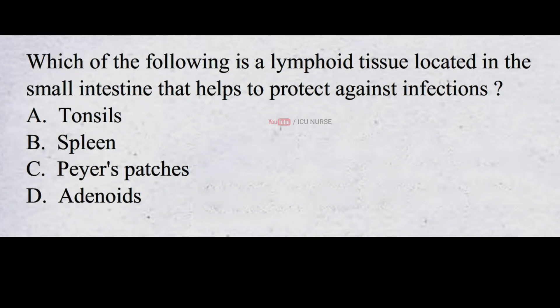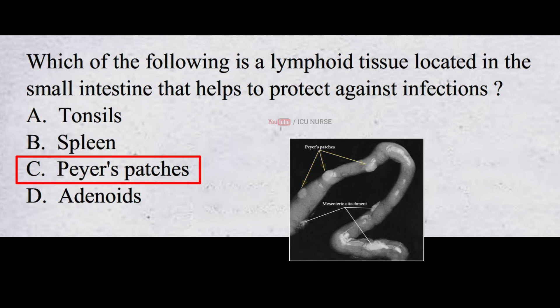Which of the following is a lymphoid tissue located in the small intestine that helps to protect against infections? A. Tonsils B. Spleen C. Peyer's Patches D. Adenoids. The correct answer is C. Peyer's Patches. Peyer's Patches are collections of lymphoid tissue that are part of the gut-associated lymphoid tissue.